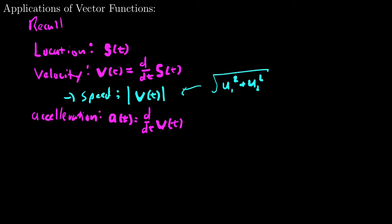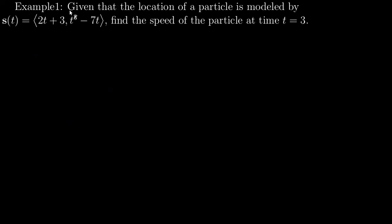So let's look at two examples. First one, given that the location of a particle is modeled by s of t equals this, find the speed of the particle at time t equals 3. So in order to find speed, I first need to find the velocity, which is the speed and direction. There's a great They Might Be Giants song about that.